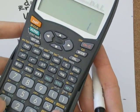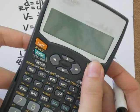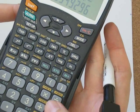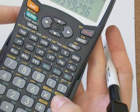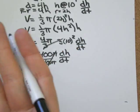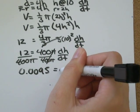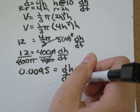I'm just going to do that on my calculator. And I'll get 0.0095. So 0.0095 equals dh dt.